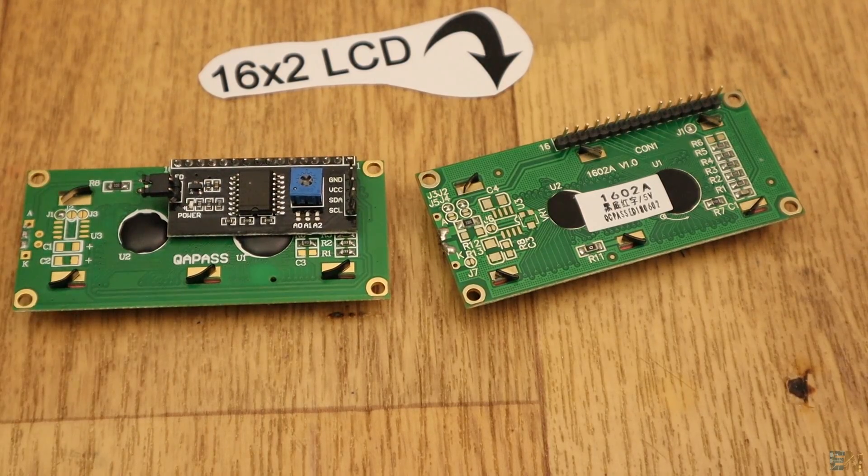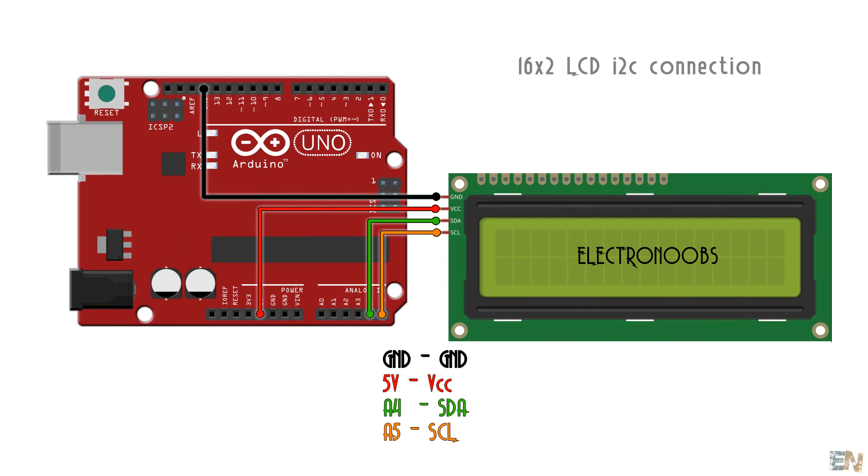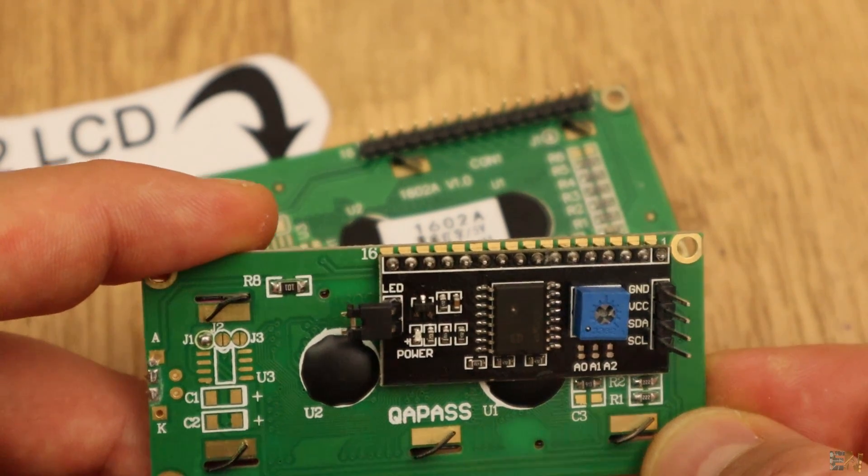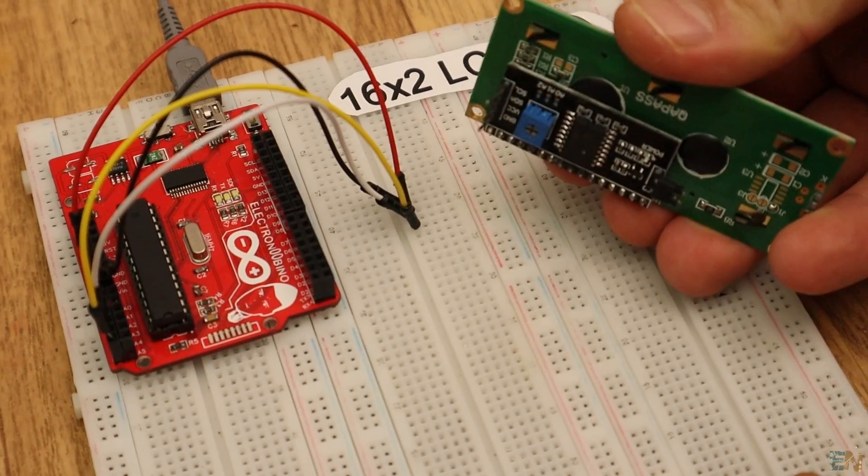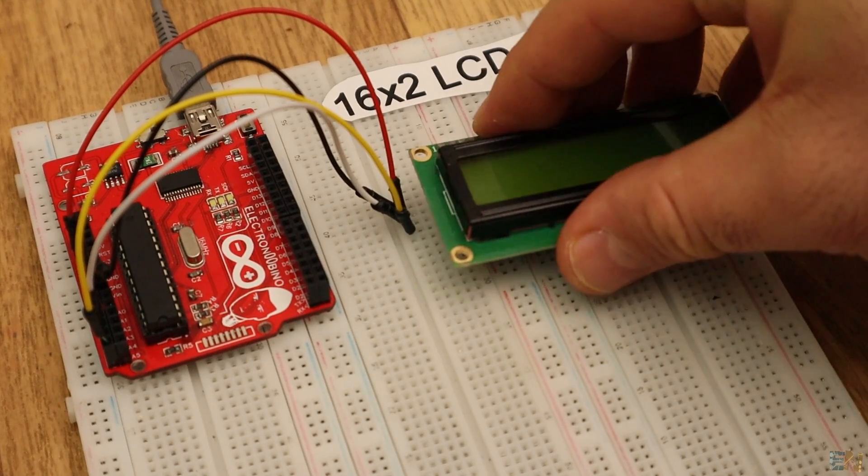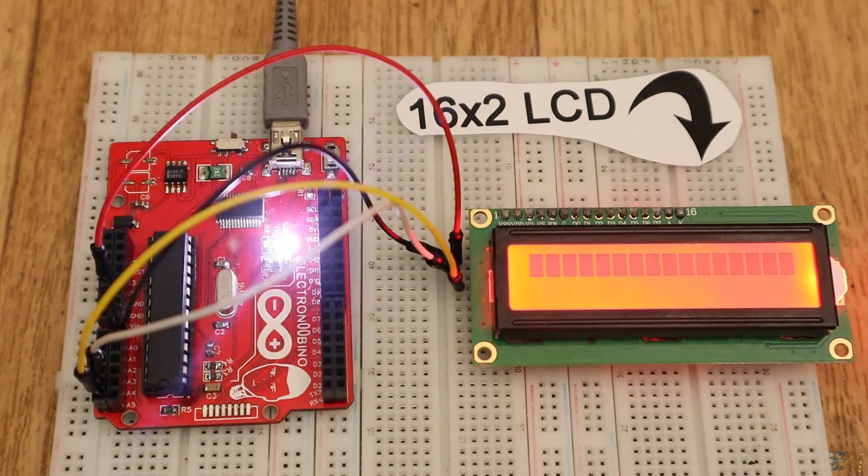So, solder this module to the display and make these connections with only two wires. Now download and open the second code for this video named example 16x2 I2C LCD. Make sure that you install the new library. Upload the code and there you go.